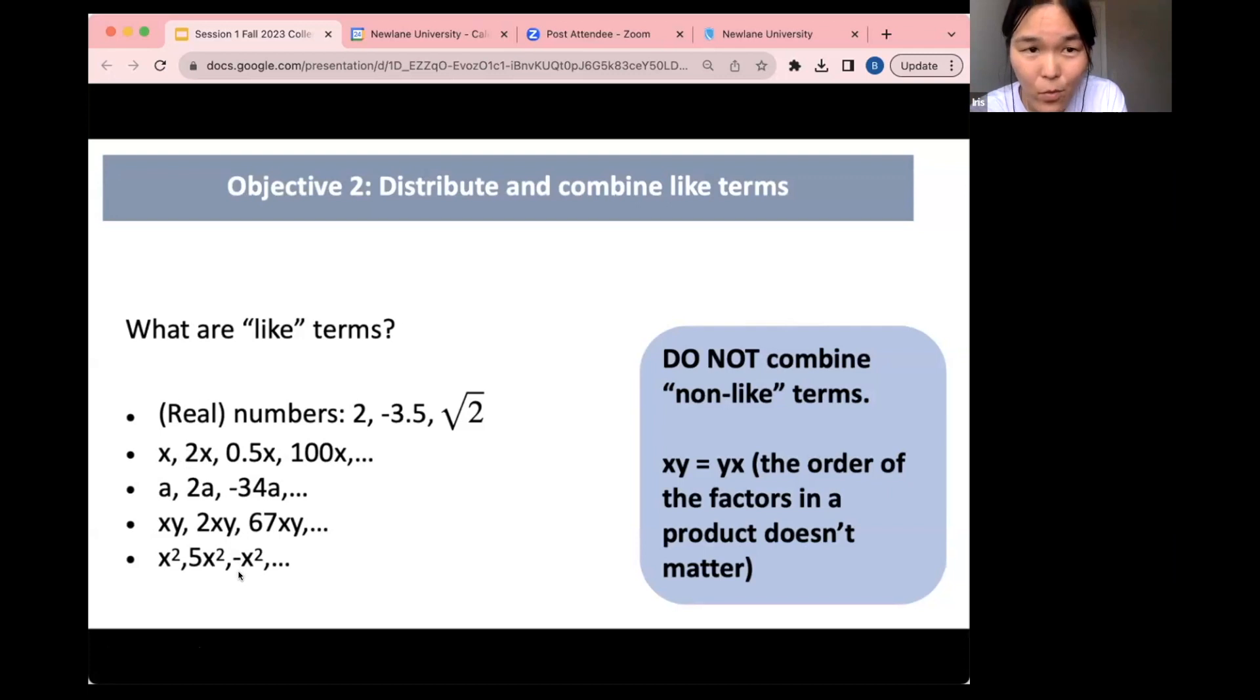X times y, xy, then 2xy, 67xy—these are all considered like terms. X squared, 5x squared, negative x squared, they also consider like terms. Basically it's a term, like a family of terms, would be a number, potentially one or another number, times a string, a sequence of letters. The exponents are important, so if you have x in a term, a like term cannot be x squared. It has to be just x.